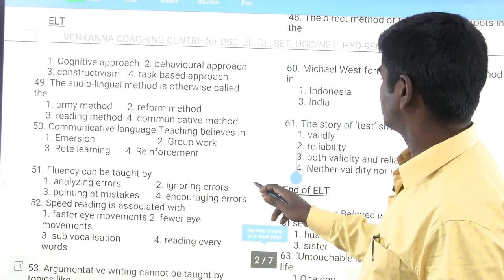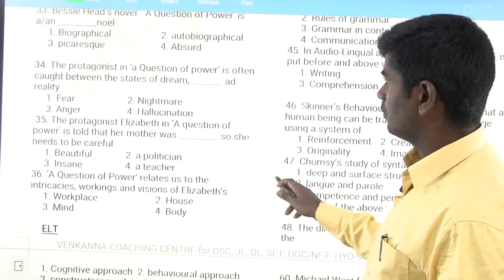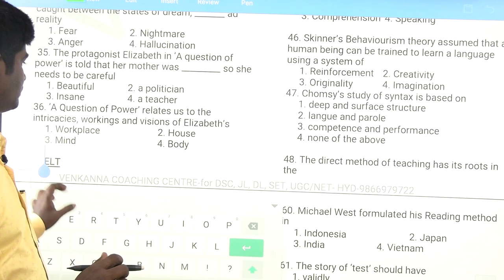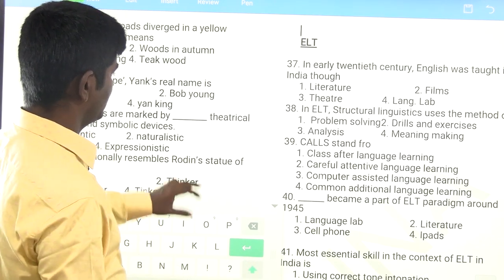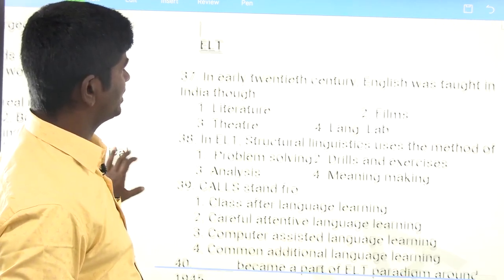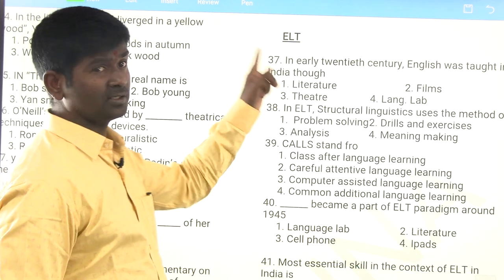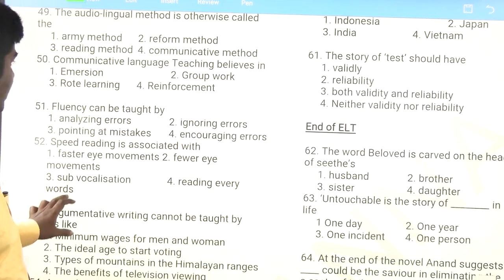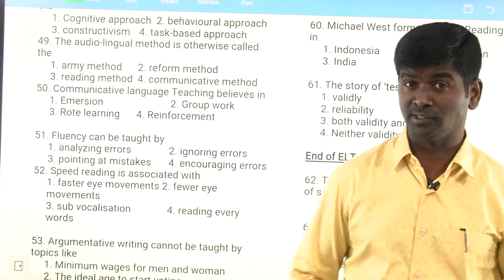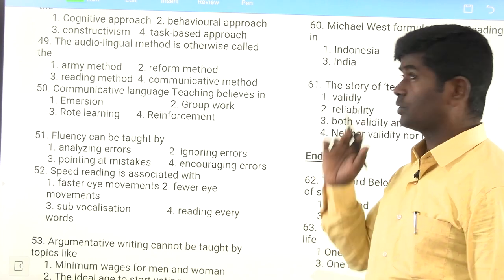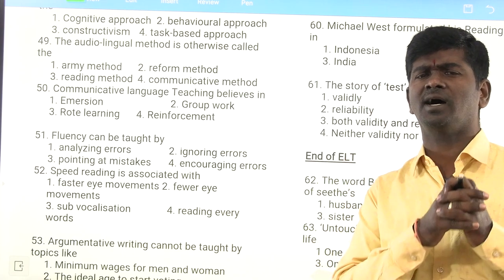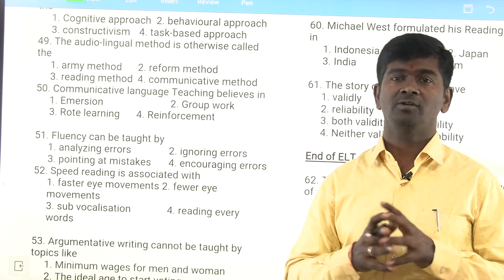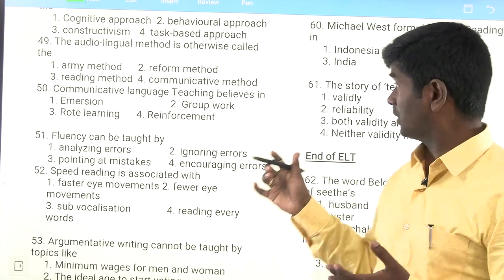In the 2013 polytechnic lecturers' question paper, ELT bits begin from question 36 and go from 37 to 61. So out of 61 total questions, 36 are from English literature and 25 bits are from ELT. Let me tell you what those 25 ELT bits cover.